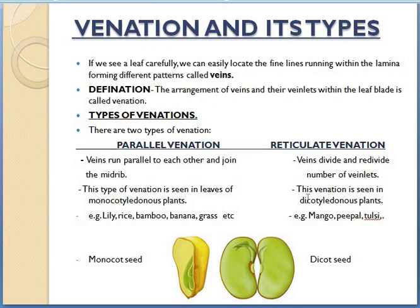This venation is seen in dicotyledonous plants. What are dicotyledonous plants? Plants which have dicot seeds. What are dicot seeds? If the seed can be divided into two parts — like a rajma bean that you eat at home — you can divide it into two parts. So this is called a dicot seed. 'Di' means two, so if a seed can be divided into two parts it is called a dicot seed. Example of reticulate venation: you can see it in the leaves of mango, peepal, or tulsi.